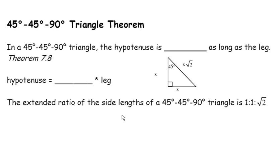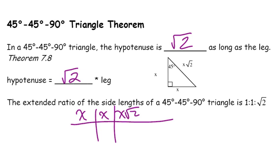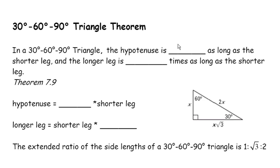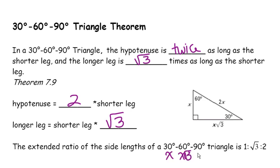Let's restate that for emphasis. In a 45-45-90 degree triangle, the hypotenuse is square root of 2 times the leg. The extended ratio is X, X, X radical 2. And for the 30-60-90, the hypotenuse is going to be twice as long as the shorter leg, and the longer leg is square root of 3 times as long as the shorter leg. The extended ratio is X, X radical 3, and then 2X.